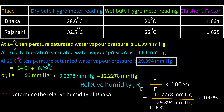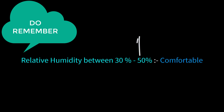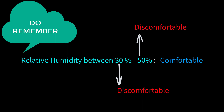Therefore, the relative humidity of Dhaka equals 41.6 percent — this is our final answer. People tend to feel most comfortable at a relative humidity of between 30 and 50 percent. Above 50 percent, weather remains wet and people sweat a lot; above 60 percent, evaporation of sweat starts decreasing, making people feel more uncomfortable. Below 30 percent, people also feel uncomfortable because the weather becomes too dry.